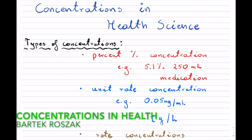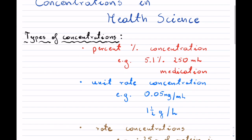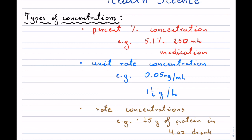Working with concentrations in health science is actually pretty neat. In this video I will go over the types of concentrations that are common — these are not all, but they will cover the majority of concentrations that you will see. The first kind is percent type of concentrations. For example, you may see something like 5.1 percent of a 250 milliliter medication.